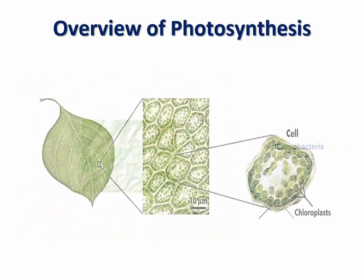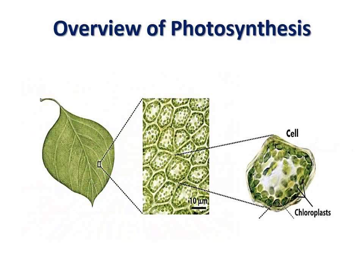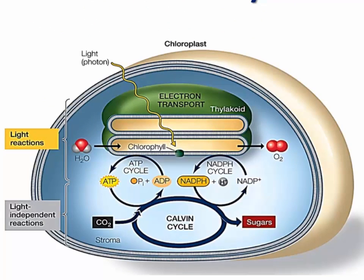In eukaryotic cells, photosynthesis occurs inside the chloroplasts, and it involves two metabolic pathways: light-dependent reactions and light-independent reactions, also known as the Calvin cycle. The light-dependent reactions are driven by light energy captured by the green pigment chlorophyll, and result in the production of ATP and the reduced electron carrier NADPH. In contrast, the light-independent reactions do not use light directly. Instead, they use the products of the light-dependent reactions — ATP and NADPH — in order to convert carbon dioxide into sugars.